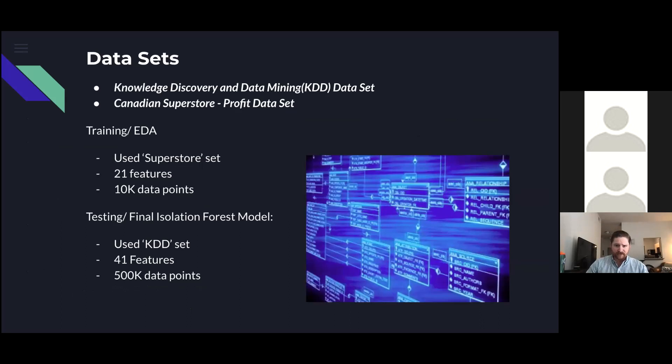I used two data sets for understanding of isolation forest, training of my model, and finally the testing of a large data set with the final version of my model. The first data set is a Canadian superstore's profit data. This data set has roughly 10,000 data points across 21 different features. The second data set I used is comprised of approximately 500,000 different network recordings and has 41 features.